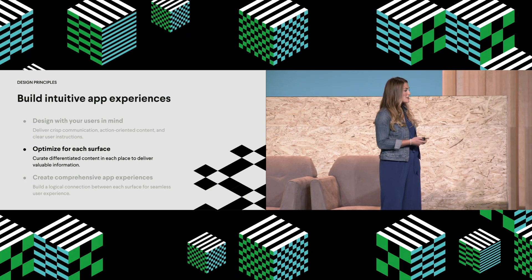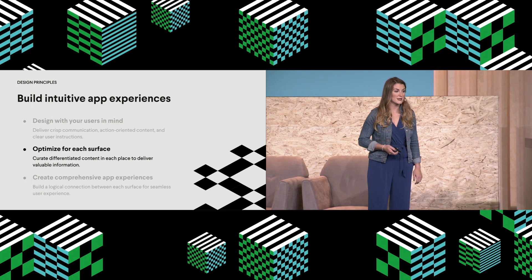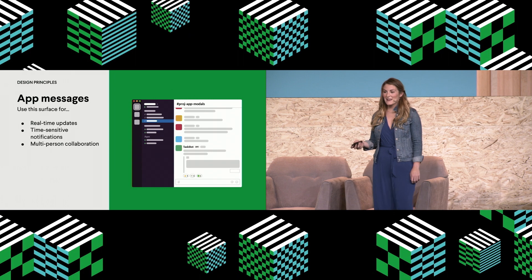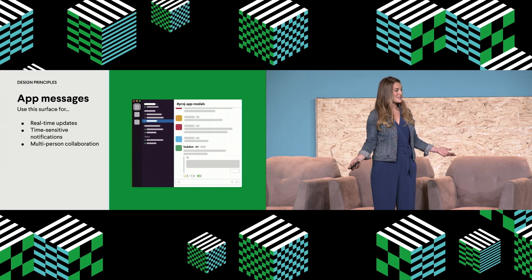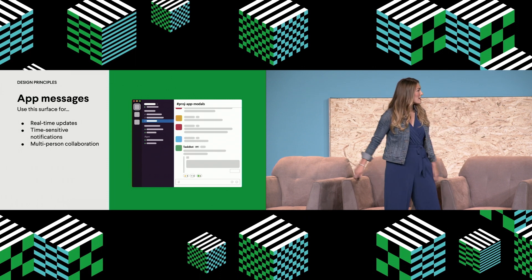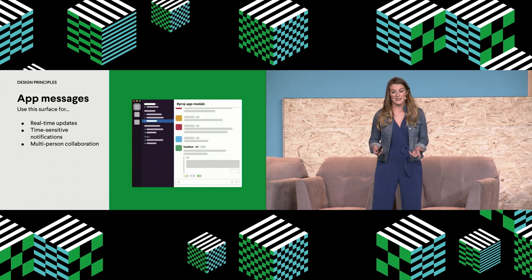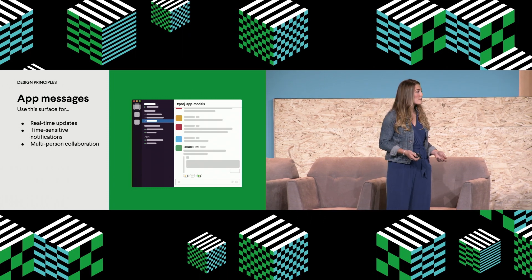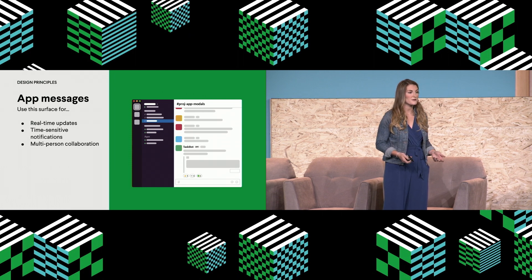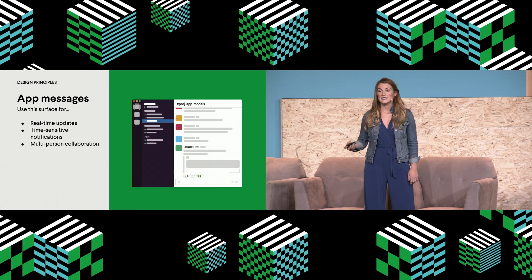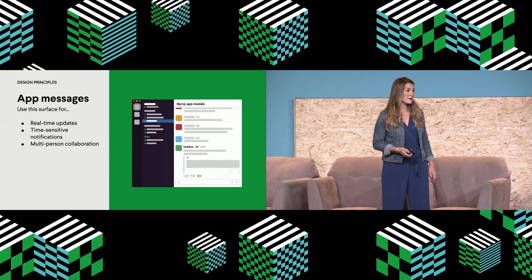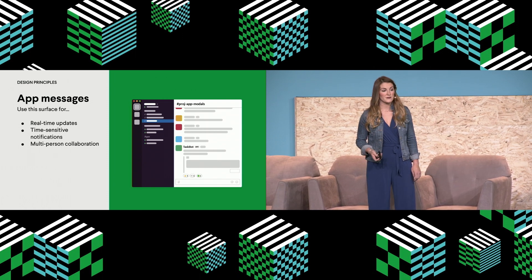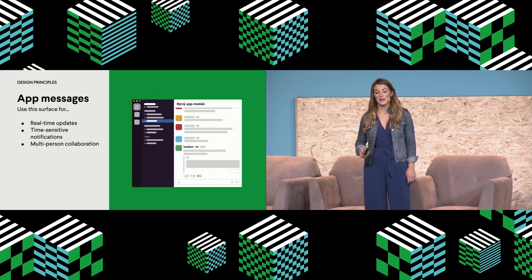So we went through a couple of best practices considering the user. Let's put those in context with each of the surface areas available to you. First we have messages — this is our OG surface area, the place that Block Kit was born. App messages can be noisy, so remember that when you're sending a message you're drawing the user's attention. Now that you have other surface areas available, we recommend you use messages for real-time updates, time-sensitive notifications, and multi-person collaboration. You can even opt out of messages with granular bot scopes to have an app-home-only app space.